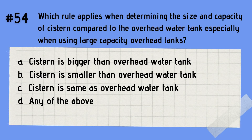Question 54: Which rule applies when determining the size and capacity of a cistern compared to the overhead water tank, especially when using large capacity overhead tanks? A. Cistern is bigger than the overhead water tank. B. Cistern is smaller than the overhead water tank. C. Cistern is the same as the overhead water tank. D. Any of the above. The answer is A — the cistern is bigger than the overhead water tank.